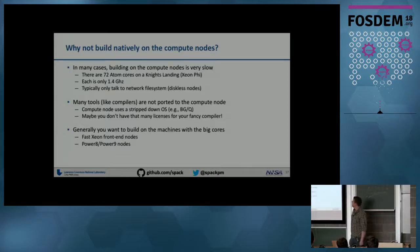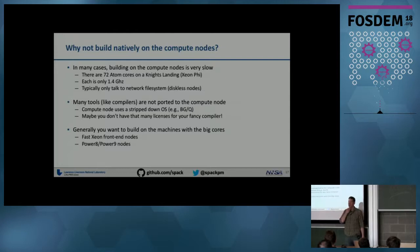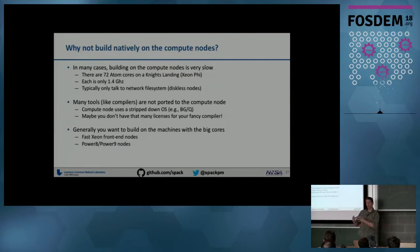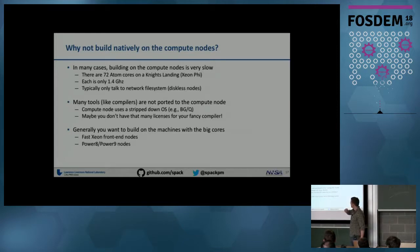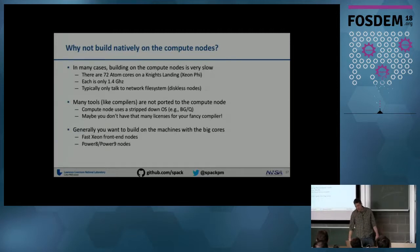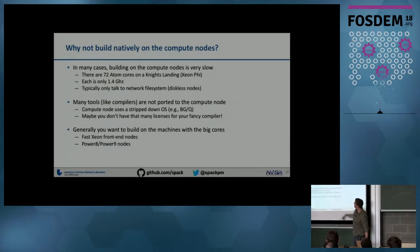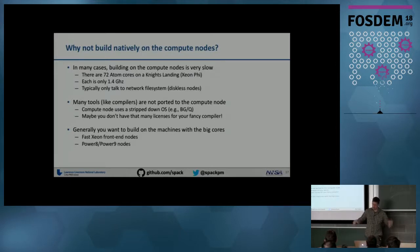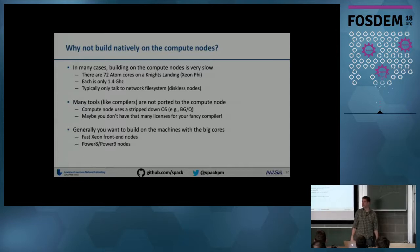Why not build natively on compute nodes? Building there is often slow — a Xeon Phi has 72 Atom cores at 1.4 GHz, and building anything significant could take hours. Those nodes are typically diskless and only talk to the network file system. Many compilers aren't even ported to the compute nodes — they only run on a standard Linux distro. We've also had people try make -j on Xeon Phi chips and blow out their Intel license by spawning 256 copies of the compiler with only 64 licenses.